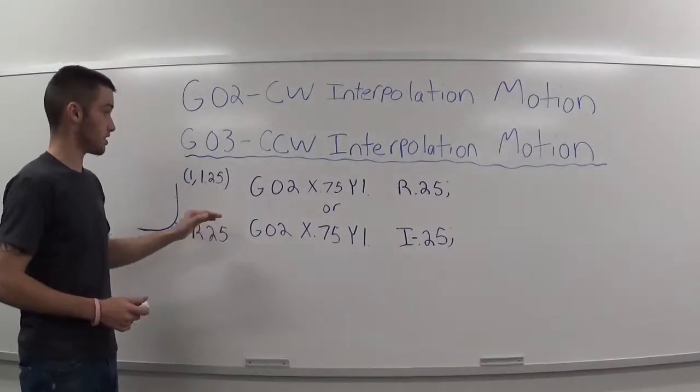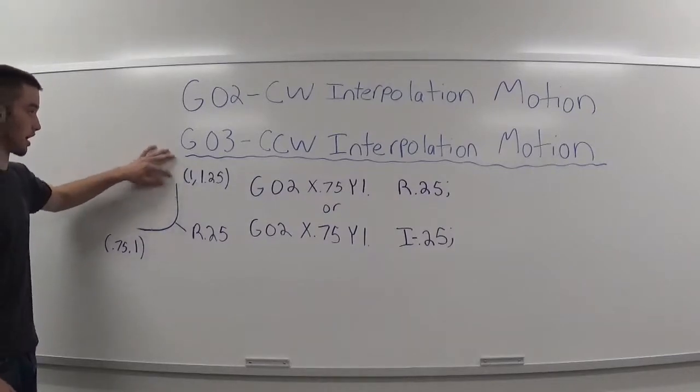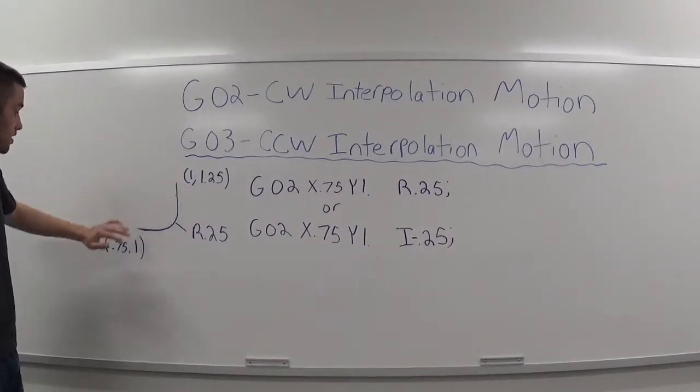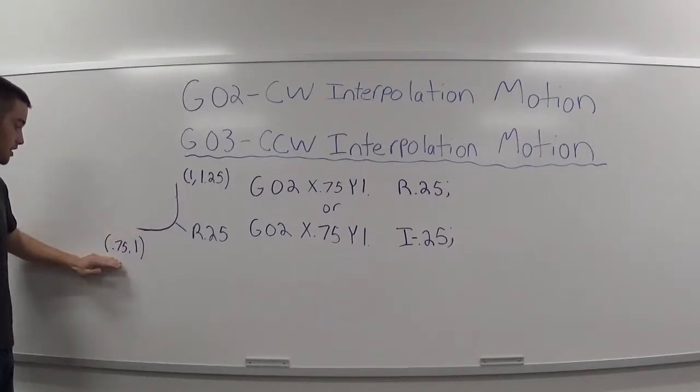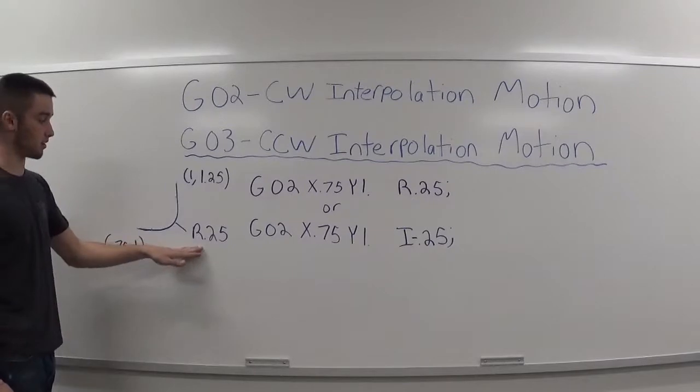The first example, we have this arc. The start point is here at an x location of 1 and a y location of 1.25. And the end of the arc ends here at an x location of 0.75 and a y of 1. And we have a radius of 0.25.